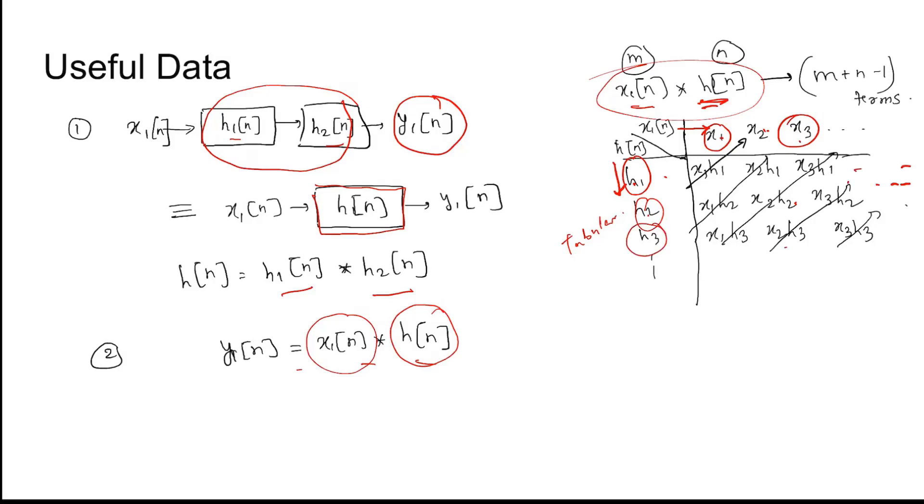Then h3 into x1, h3 into x2, h3 into x3, and so on. After that, we draw diagonals like this, and along the diagonals we sum them up and write them in brackets. After obtaining the result, this result will give us the value of x(n) convolution h(n), and the number of terms will be m + n - 1, where m is the number of terms of x(n), n is the number of terms of h(n).